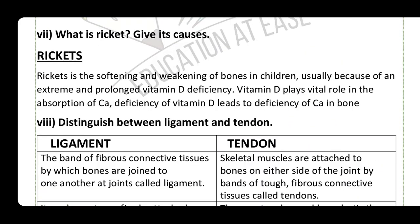Question number seven: what is rickets and what are its causes? Rickets is a softening and weakening of bones in children, usually because of extreme and prolonged Vitamin D deficiency.